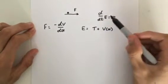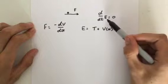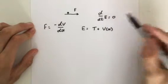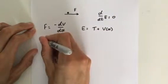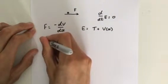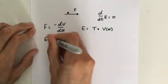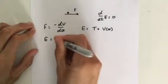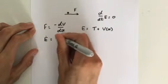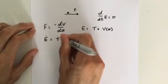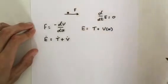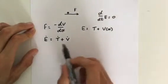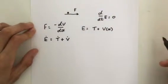So what we want to calculate is the rate of change of energy. We can say E-dot is equal to T-dot plus V-dot. So we just differentiate our total energy.